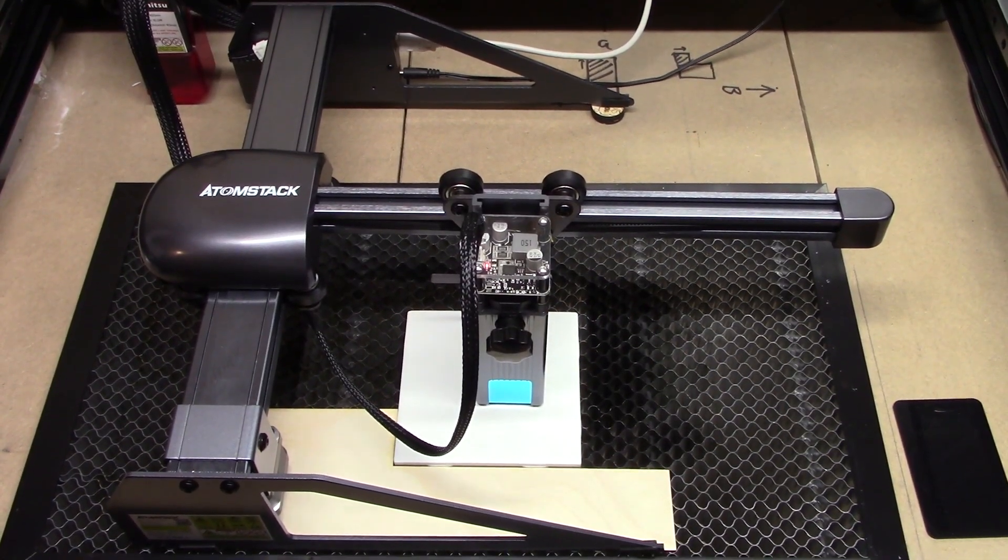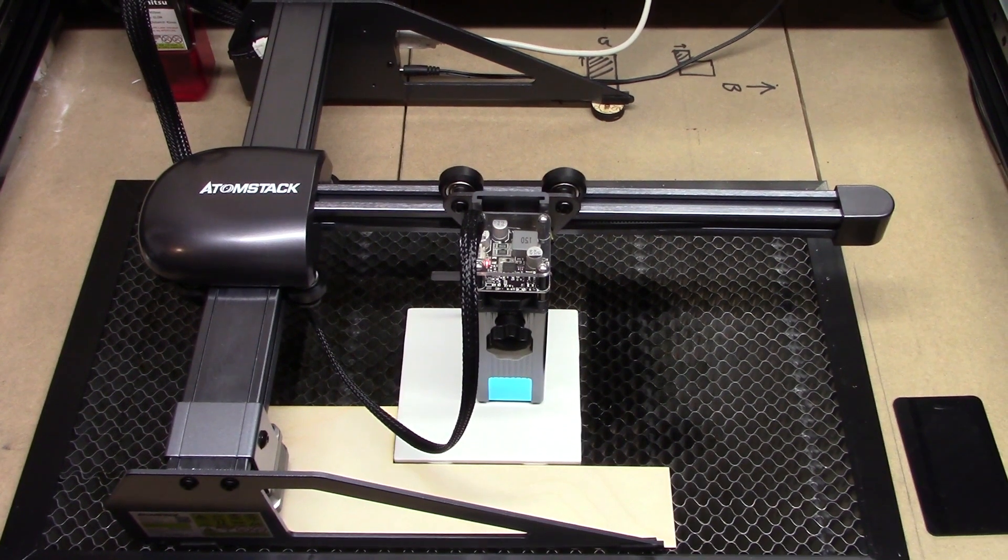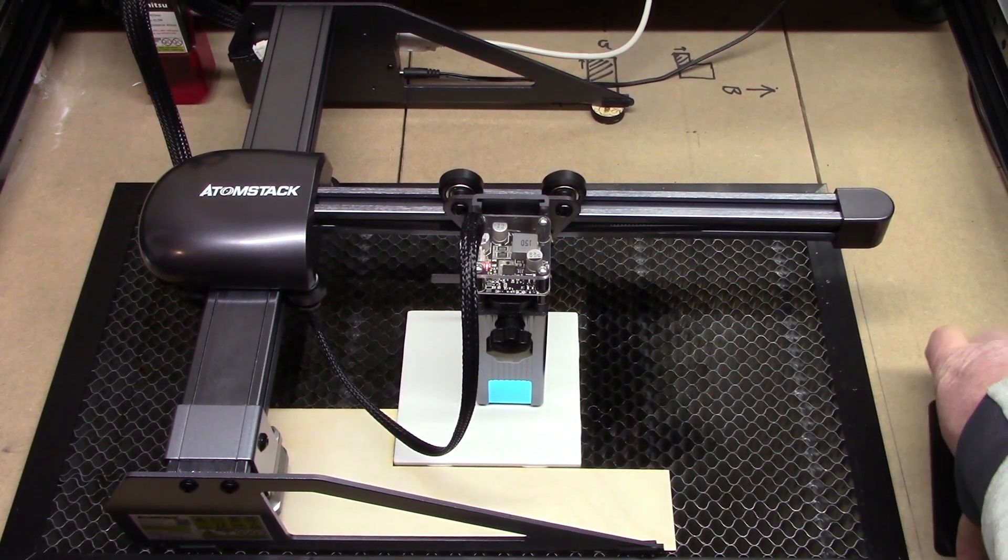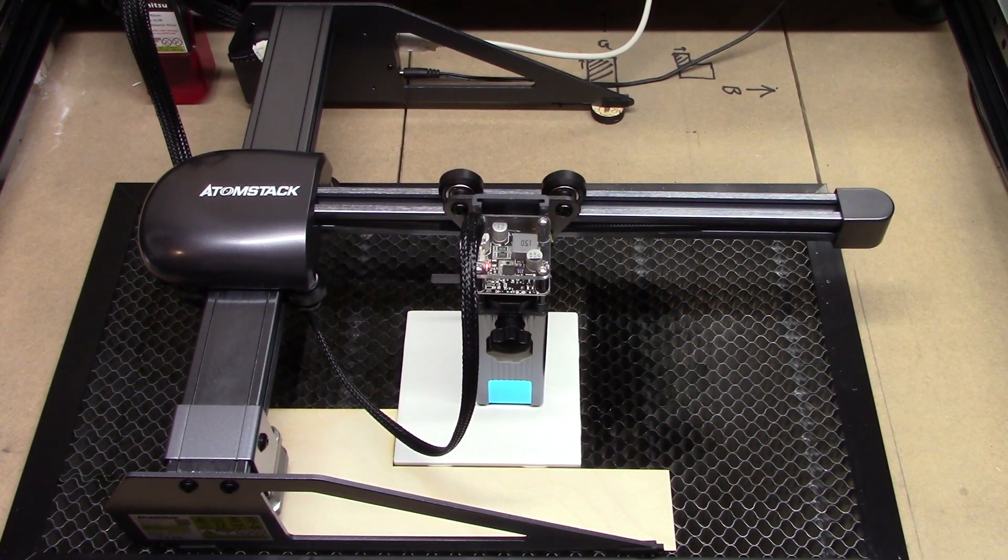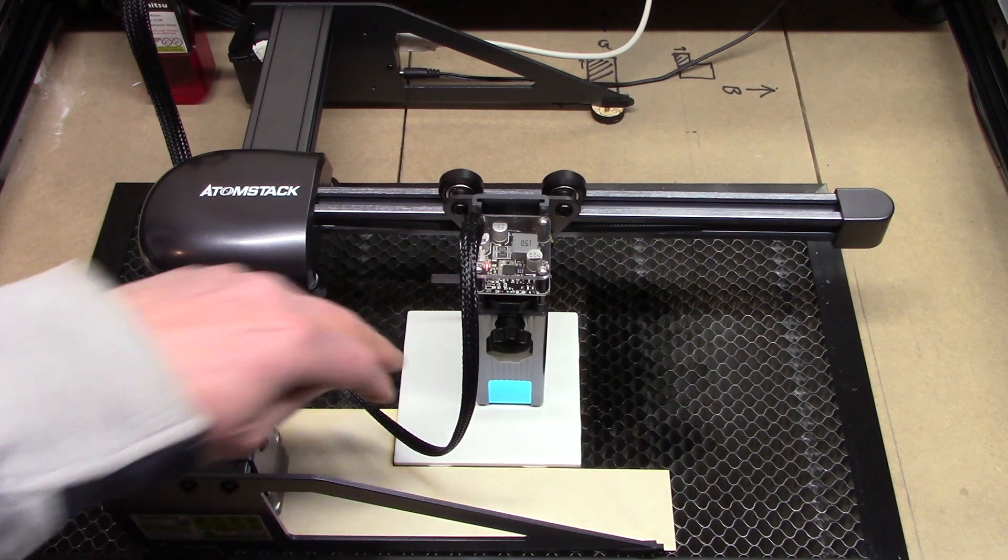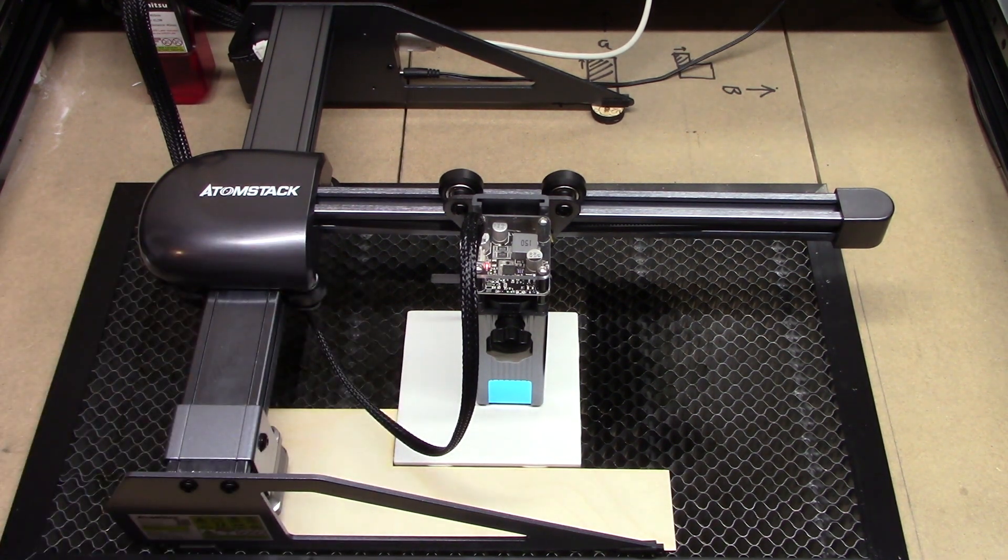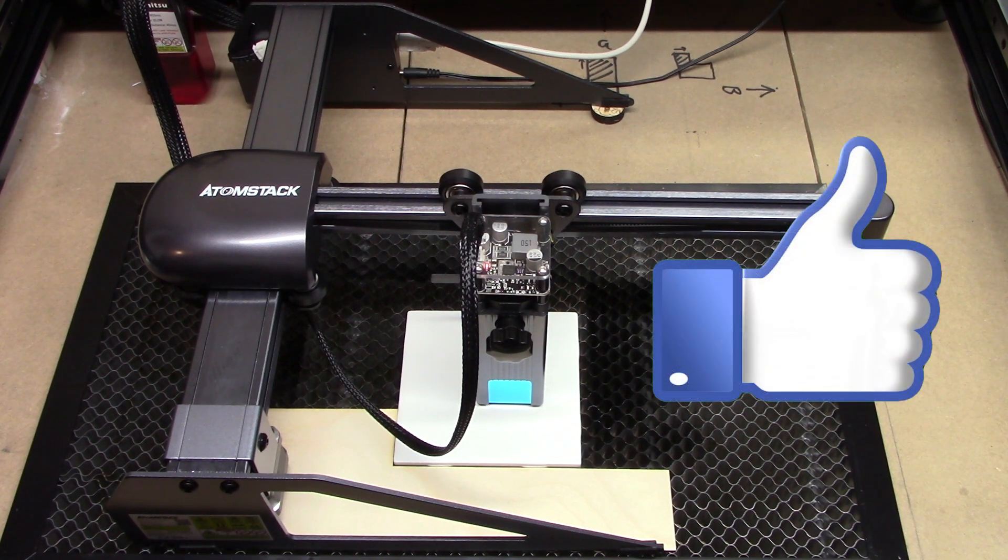Hi, AT from CNC at Home here. We have the Atomstack P7 and I want to do a material test. We've done many coasters in the past where it's been painted with white paint, we burn it with the laser, it turns black, we get the paint removed, and where it turned black adheres.